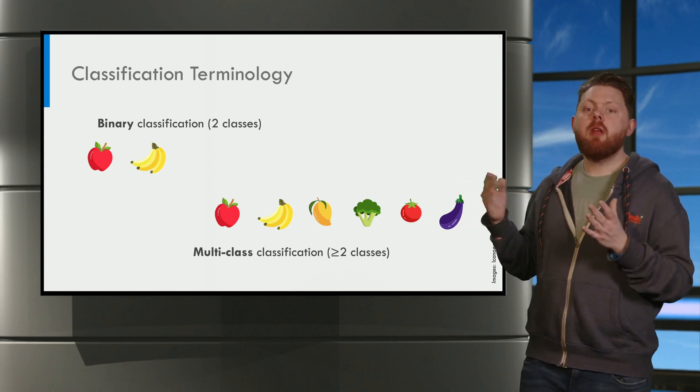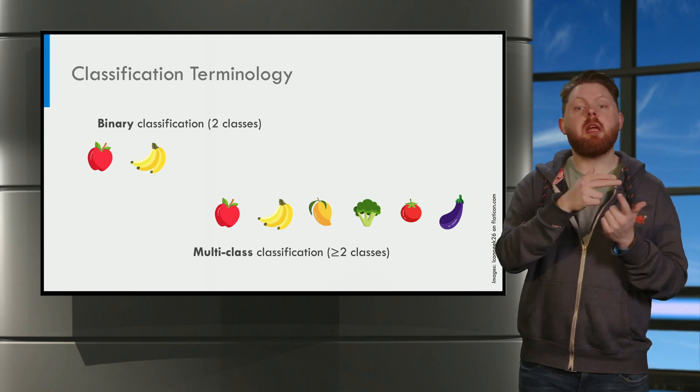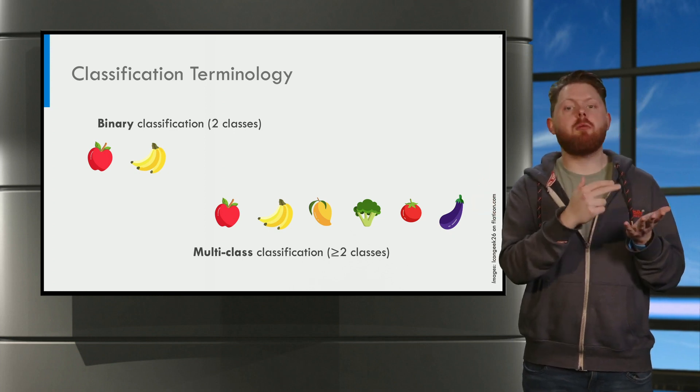For example, here we have six classes. Apple, banana, mango, broccoli, tomato and eggplant.